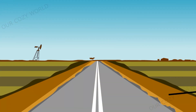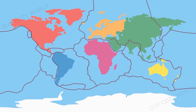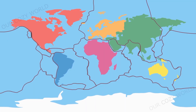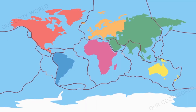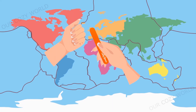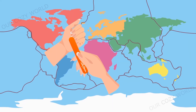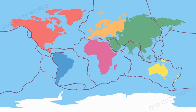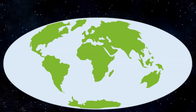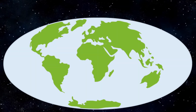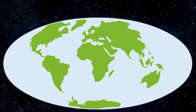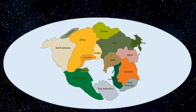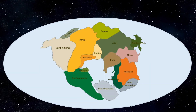The continents are still moving today — really very slowly, so slowly that no one on Earth can feel it, just a few centimeters every year. Your nails grow at about the same rate. Scientists believe that the continents will reunite again in the distant future, and most of the world's landmass will be joined into a supercontinent called Pangaea Ultima.